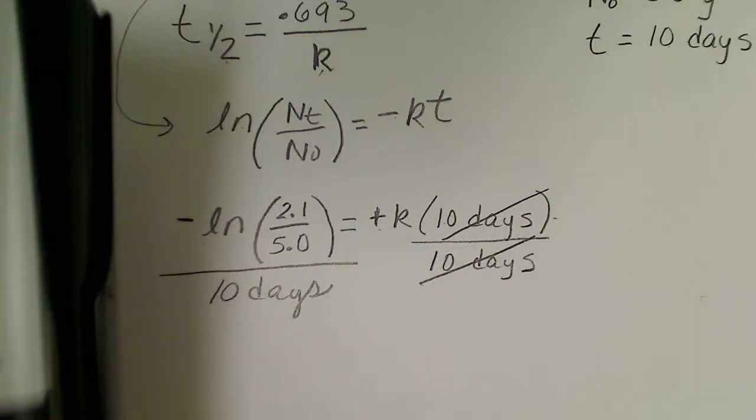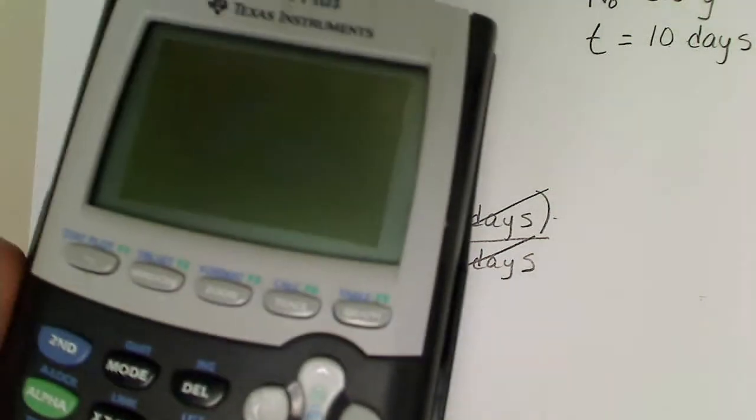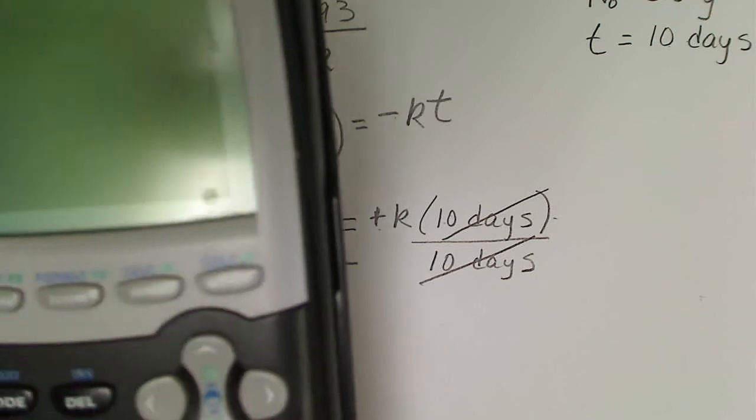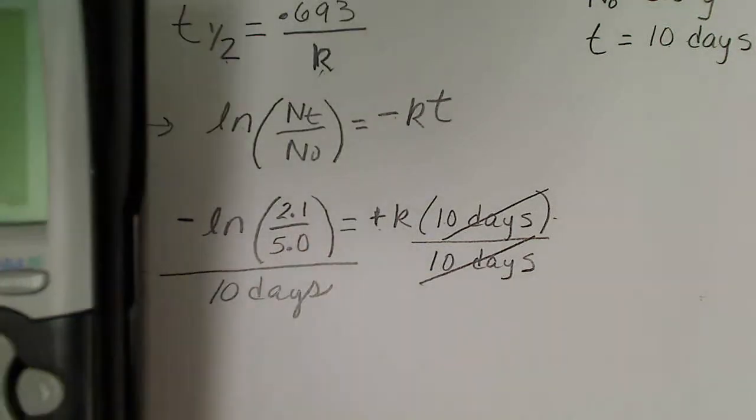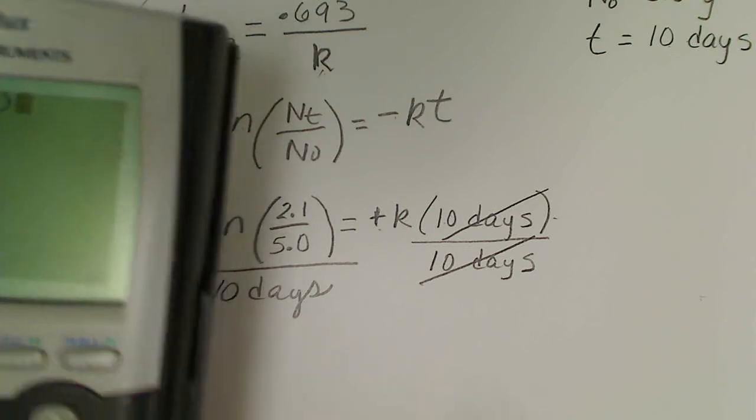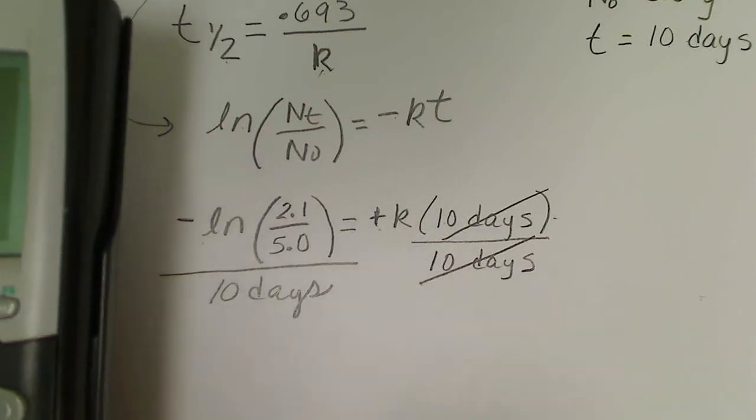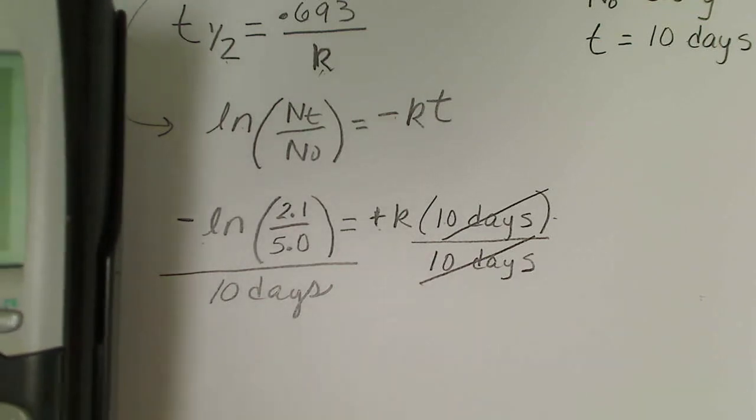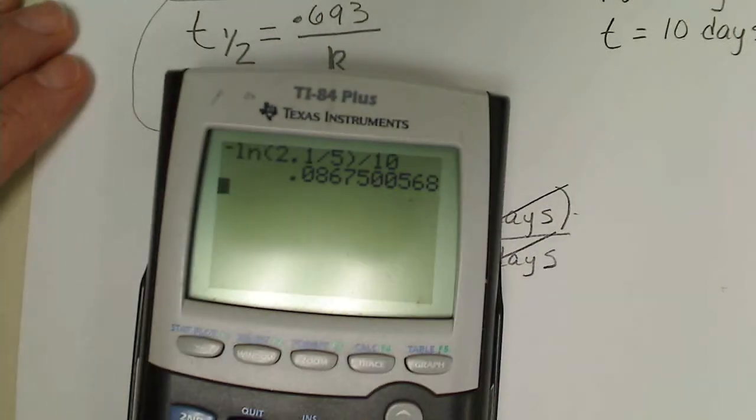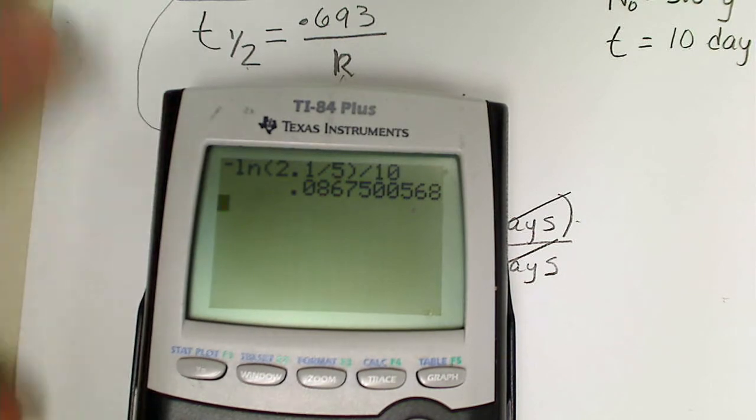I've got to be careful to enter the negative sign. I take the negative natural log, that's 2.1 divided by 5, close the parentheses, and then divide that by 10.